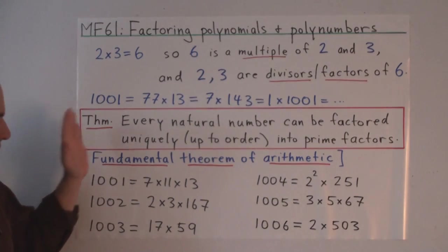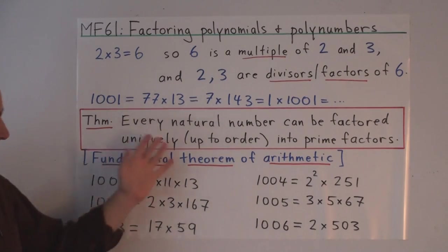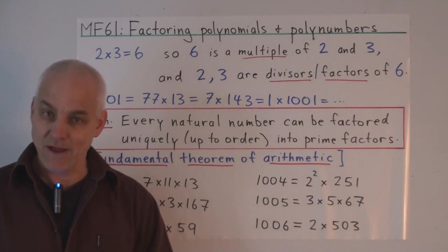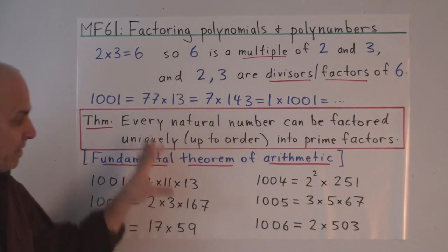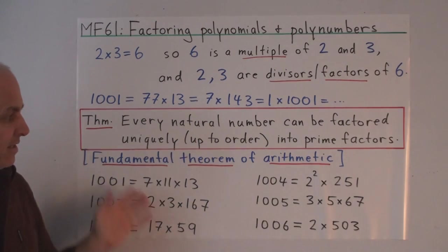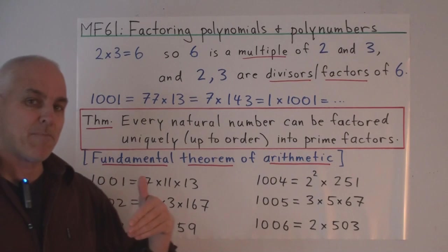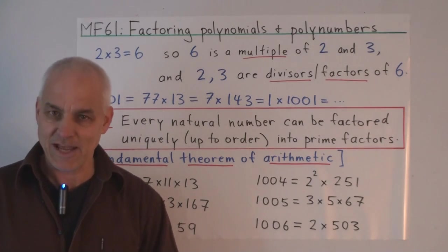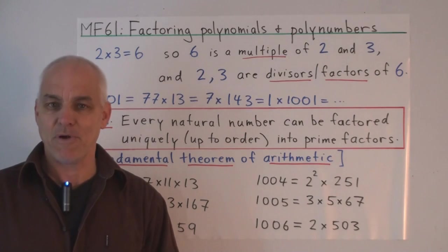All right, so we're not going to prove these facts. These are kind of standard facts. There's nothing problematic about them once you've set up arithmetic as we have done. But we are going to be interested in extending this kind of thinking to polynumbers and polynomials, which are, as we've seen last time, just certain types of polynumbers.